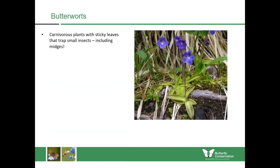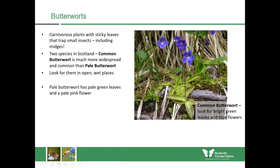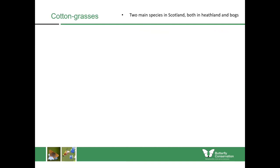Butterworts are another carnivorous plant with sticky leaves that trap small insects such as the famous Scottish midge. Unlike sundews, they don't have big globules, but the leaves are still sticky. There are two species found in Scotland: common butterwort, which is much more widespread and has bright green leaves and blue flowers; and pale butterwort, which has paler green leaves and a pale pink flower and is much less common. Both can be found in open wet places.